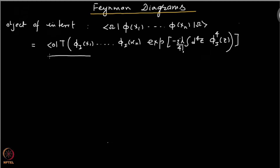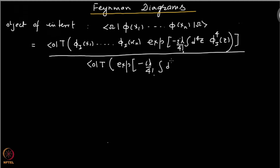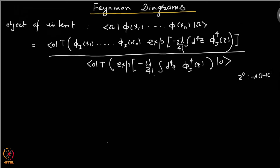And of course we remember that we have to divide this entire thing with almost what you have in the numerator except for these fields — you just have this exponent, so time ordered. Also remember that the time component here is not running from minus infinity to infinity; it is running from minus lambda(1 minus epsilon) to lambda(1 minus epsilon) where lambda goes to infinity, and eventually we have to take epsilon going to 0. But the space components run from minus infinity to plus infinity.